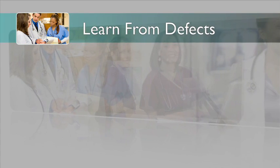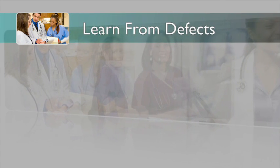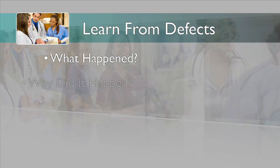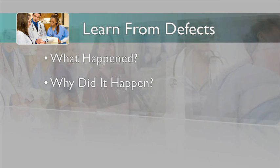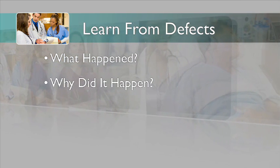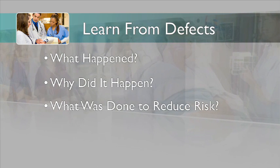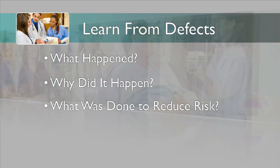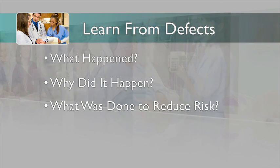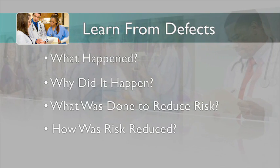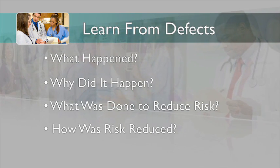A very practical way to learn from defects is by asking four simple questions: What happened? Why did it happen — that is, what systems were involved? What did you do to reduce risk using those principles of safe design? And how do you know that it worked — that is, how do you know you actually reduced risk?